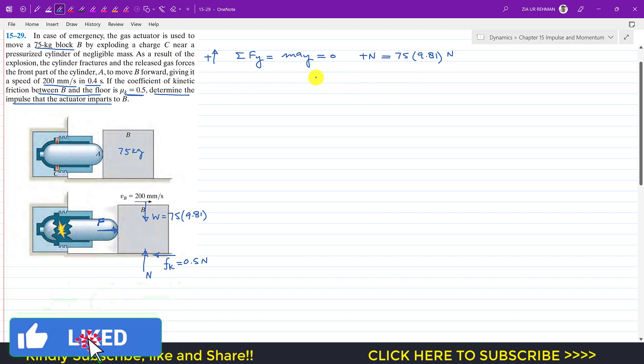This equals 0. We can say that N is equal to the weight in newtons. Similarly, we are going to apply the principle of impulse and momentum, which is m v1 plus the summation of the impulse due to external forces equals m v2.